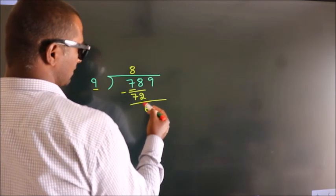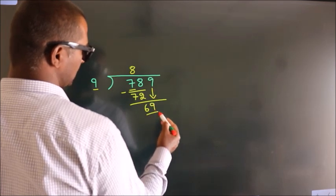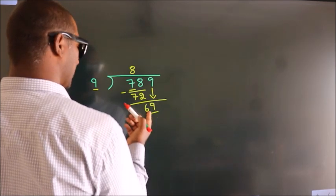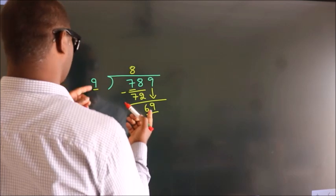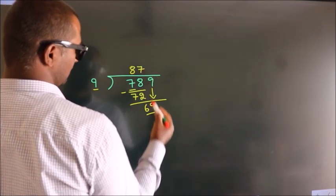After this, bring down the next number. So 9 down, we get 69. A number close to 69 in the 9 table is 9 sevens, 63.